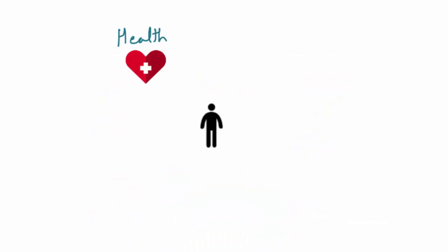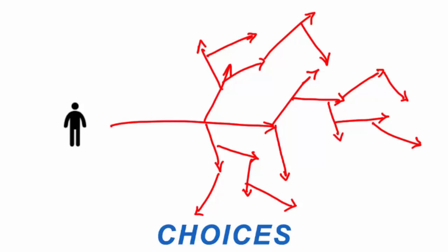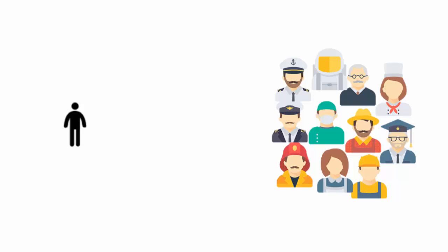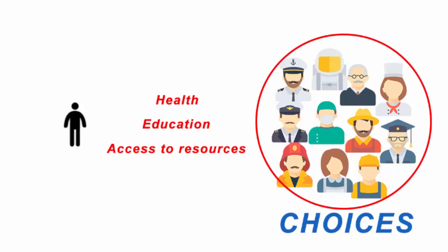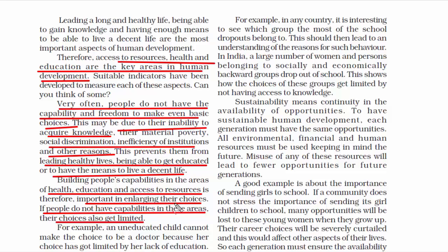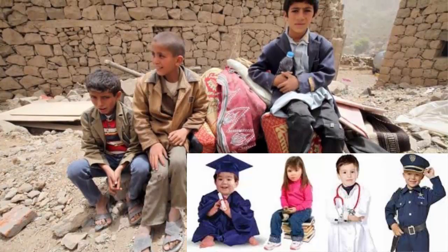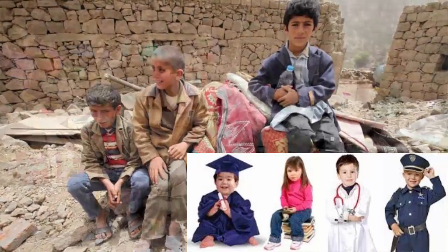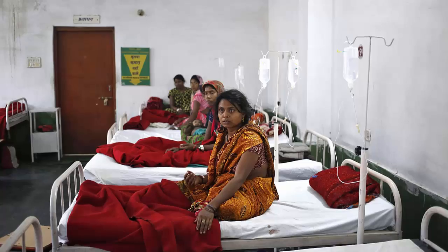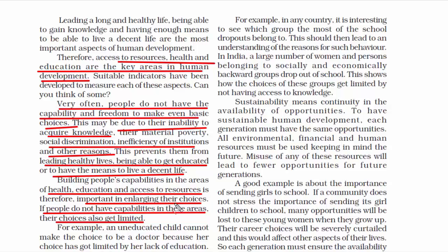The best approach is to work on the areas of health, education, and access to resources, which will enlarge their choices, and if they have more choices, that will improve their lives. Those basic elements like health, education, and resources have to be there for any society by default. An uneducated child cannot make the choice to be whatever he or she wants to become because their choices are limited by the lack of education. Similarly, poor people cannot choose to take medical treatment because they cannot afford it or don't know where to go — both money as a resource and knowledge are limited.